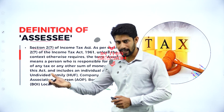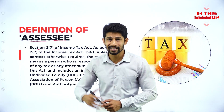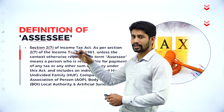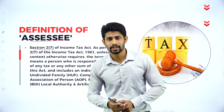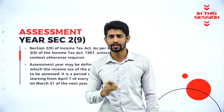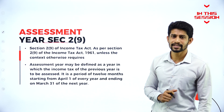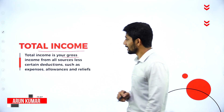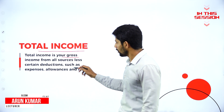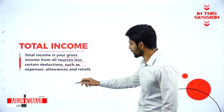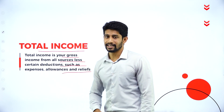The person who is liable to pay tax or any other sum of money in the form of penalty or interest to the tax authority, that person will be called as assessee. The word assessee is explained under section 2, subsection 9 of the Income Tax Act 1961. Total income is your gross income from all sources, less certain deductions such as expenses, allowances and relief.